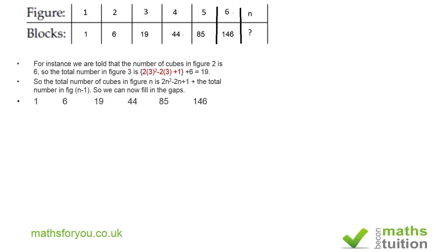Now looking at differences: the difference between figures 1 and 2 is 6 minus 1, which is 5. Between figures 2 and 3: 19 minus 6 equals 13. Between figures 3 and 4: 44 minus 19 equals 25. Between figures 4 and 5: 85 minus 44 equals 41. Between figures 5 and 6: 146 minus 85 equals 61. The first line of differences is not constant, so the sequence is at least quadratic or cubic.